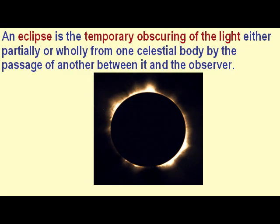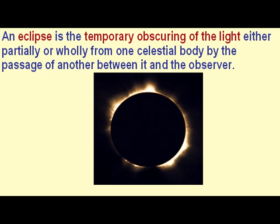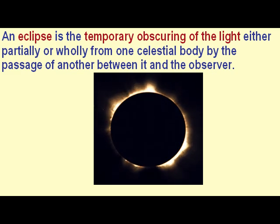An eclipse is the temporary obscuring of the light, either partially or wholly, from one celestial body by the passage of another between it and the observer.